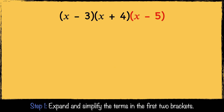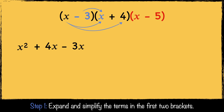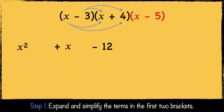Let's start with step one — we're going to expand and simplify the terms in the first two brackets. x multiplied by x is x squared, x multiplied by 4 is 4x. Next we multiply minus 3 by x, which gives us minus 3x. Then minus 3 multiplied by 4 is minus 12. Now we simplify by combining the like terms: 4x minus 3x is 1x, which we just write as x.